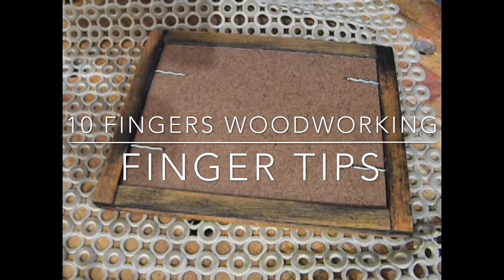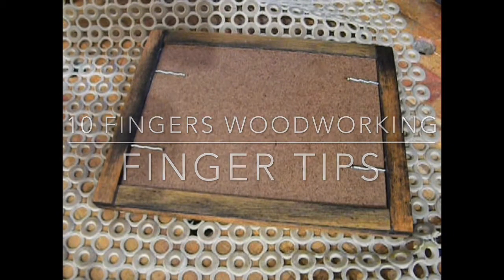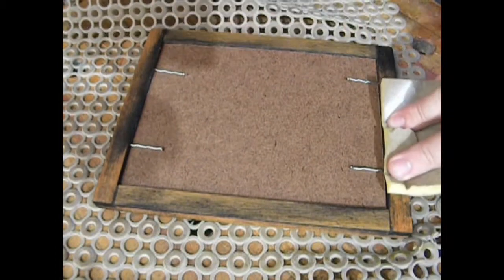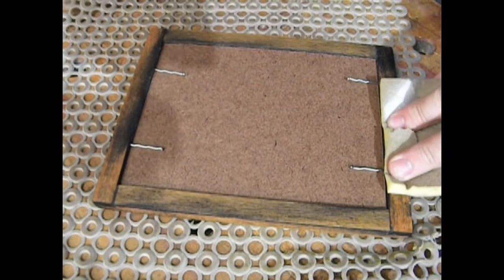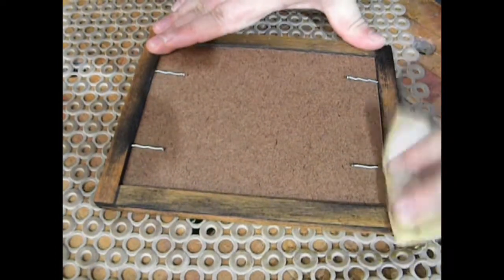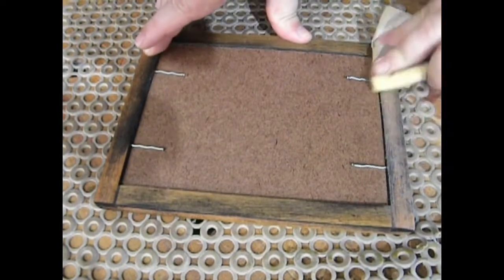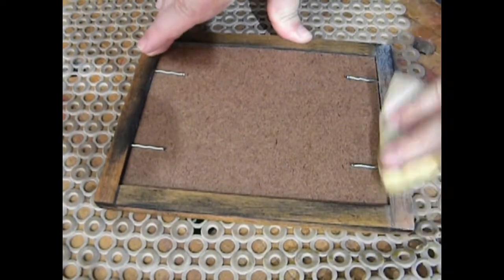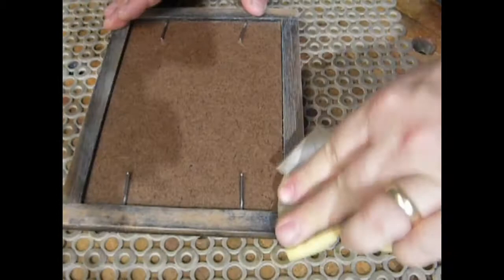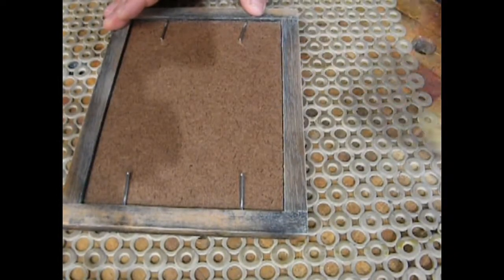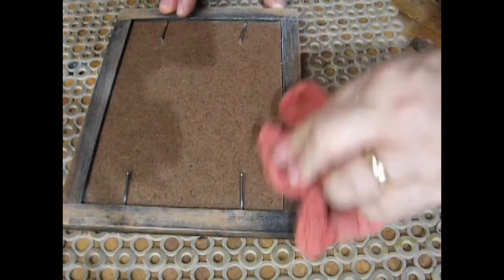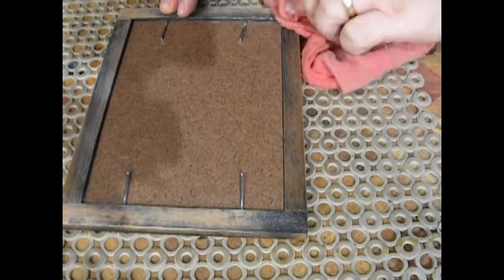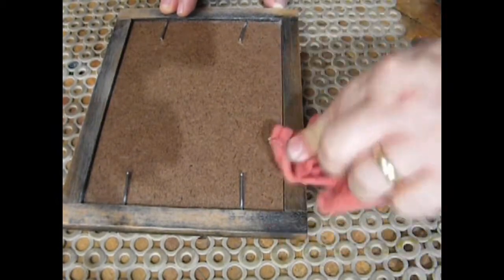When I make picture frames, I often put paper on the back to make it look more finished and hide these humongous nails. So the first step is to sand off any finish or oils that are on the back so the tape can adhere. Of course, you need to clean off the sanding dust.